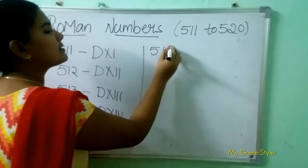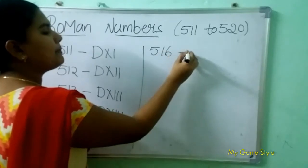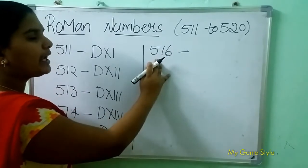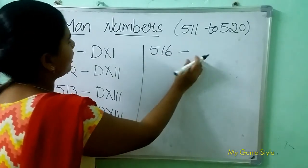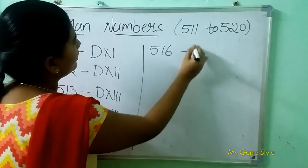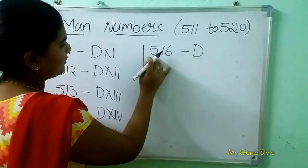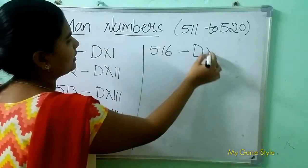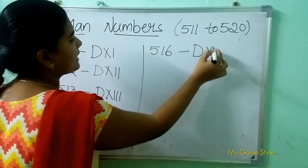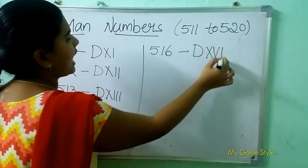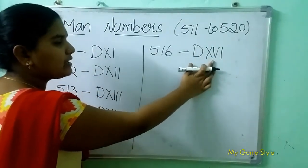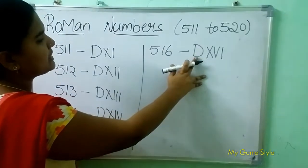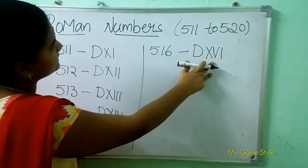516 means 516. So how to write here? D is 500. XVI is 16. So this means 516.